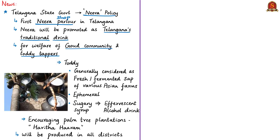The Goud community is known for toddy extraction and has preeminence in this skill. Toddy is generally considered the fresh or fermented sap of various Asian palm trees. The sap mainly consists of water with dissolved sugars and mineral salts. In common parlance, toddy tappers are individuals engaged in the collection and preparation of toddy.